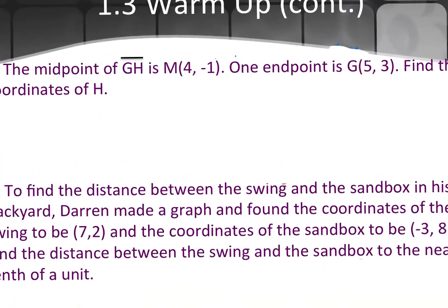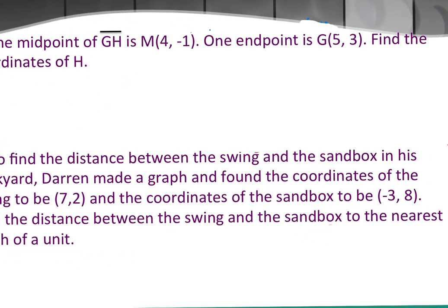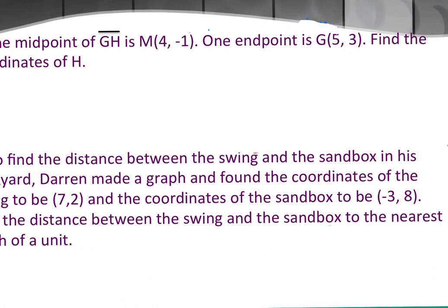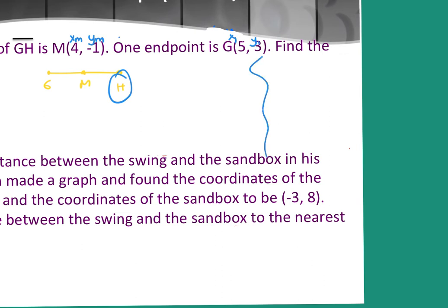All right, so 4 is the one that I think is probably the trickiest in this lesson, right? It says the midpoint of GH is (4, -1). One endpoint is (5, 3). Find the coordinates of the other endpoint. If you want the visual, it'd be G to H. M is in the middle. So I need to find the coordinates of H. I have my x1 and y1 in G, because that's one of the endpoints. And I have the x of my midpoint, and I have the y of the midpoint. What I don't have is the second x and the second y.